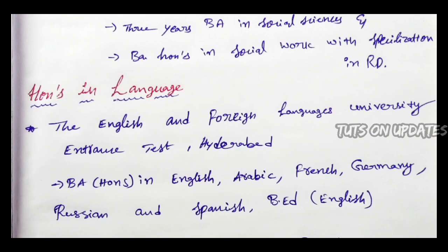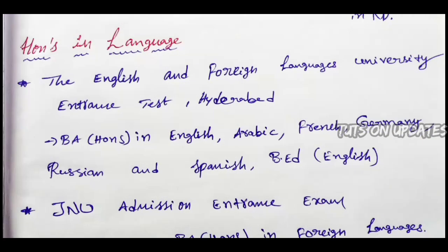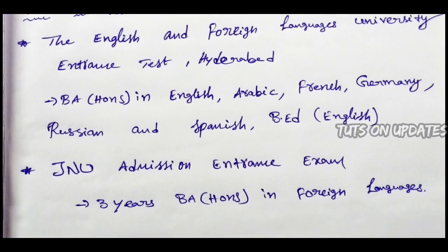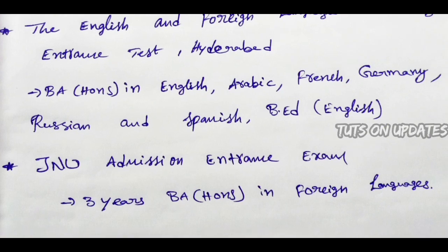Next, honors in Languages. If you have completed a degree in foreign languages, you will need to complete certain examinations. First is the English and Foreign Languages University Entrance Test — EFL University — for BA honors in English, Arabic, French, German, Russian, and Spanish. Next is the Jawaharlal Nehru University Admission Entrance Exam — JNU — which is for a 3-year BA program.